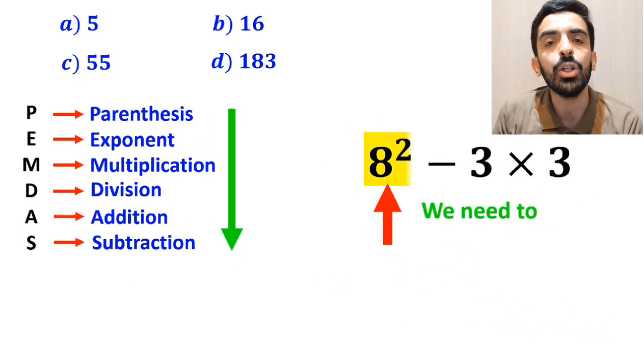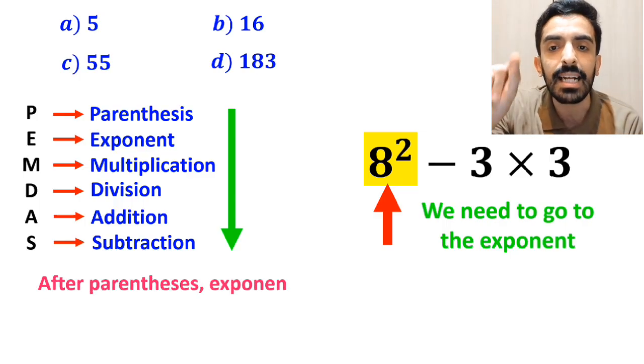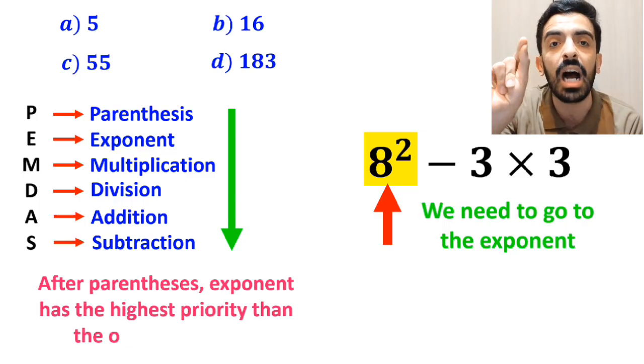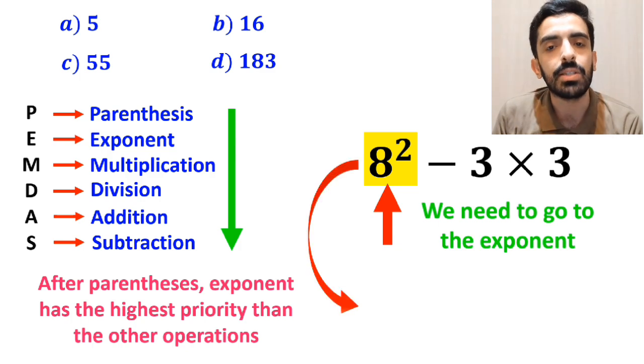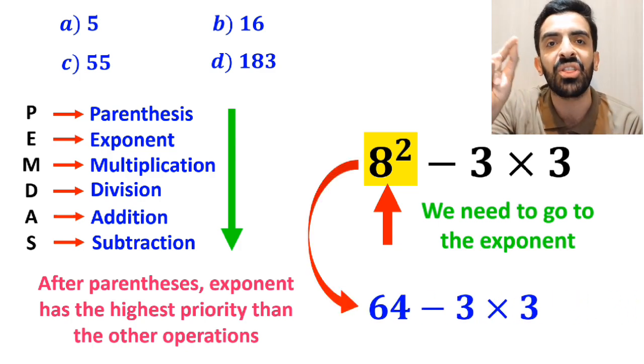In the next step, we need to go to the exponent, because in the PEMDAS rule, after parenthesis, this exponent has the highest priority than the other operations. So, this expression simplifies to 64 minus 3 multiplied by 3.